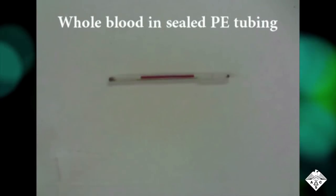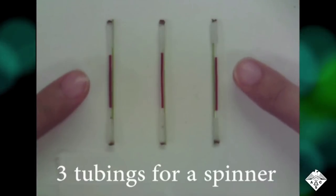To find out, the researchers placed human blood samples in tiny tubes, sealed the ends, and taped a tube to each of the three prongs of a fidget spinner.